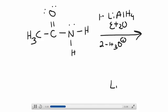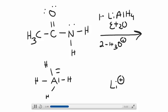Lithium is a spectator ion, so I'm just going to draw it over to the side — it's here the whole time and does nothing. You've got your aluminum hydride. The aluminum is less electronegative than the hydrogen, so when the aluminum-hydrogen bond breaks, the hydrogen takes the pair of electrons, forming a hydride. And hydride is a very good base.